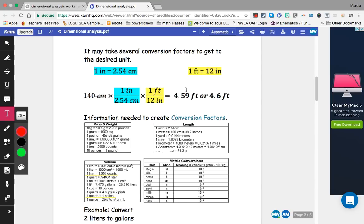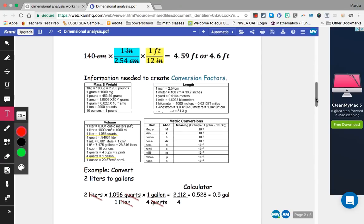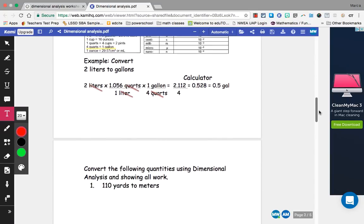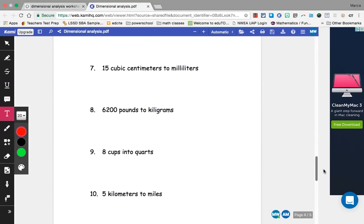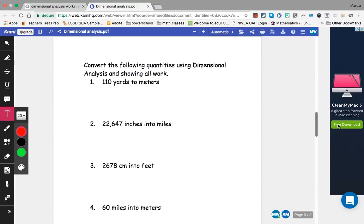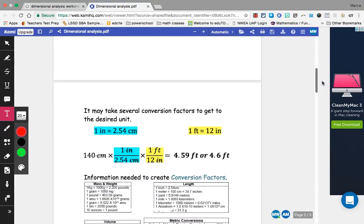So this is just a table of known information that can be used to create your conversions. As you work through your problems, you might want to look back up at some of these to help determine what your conversion is going to be as you try to go from one unit to another. So try some of these. If you're having trouble, just send me an email. We'll find some more videos for you to practice with.